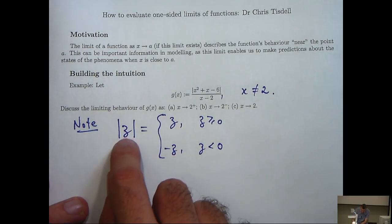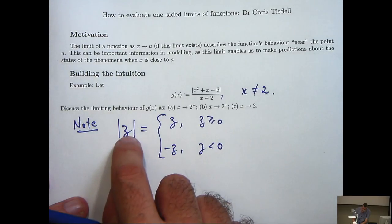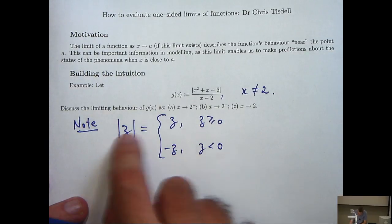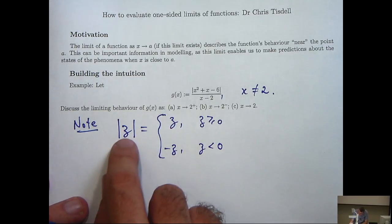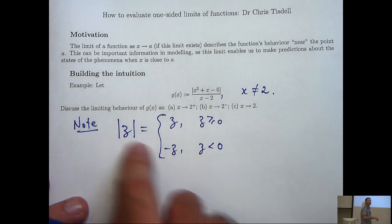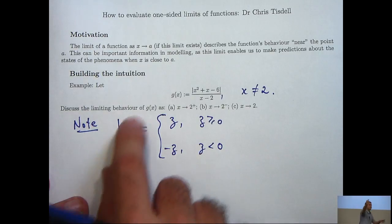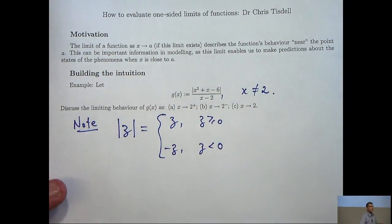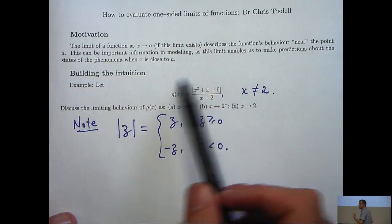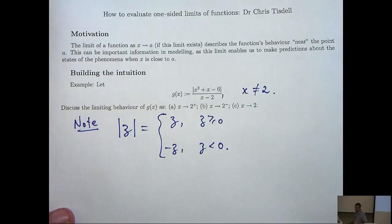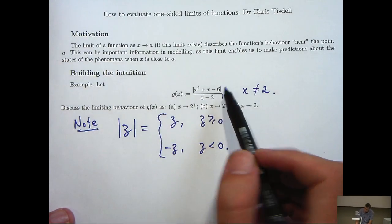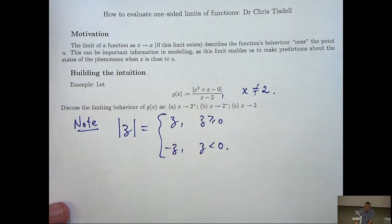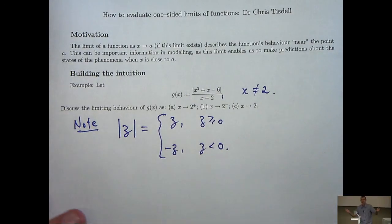So what this means is, if the expression inside the absolute values is non-negative, then you just remove the absolute values. If what's in the absolute values is negative, then you remove the absolute values and put a minus sign. So we're going to use that information to simplify g. So the basic idea of my solution here is to simplify g as much as possible by removing or simplifying the absolute value sign and then taking the limit.